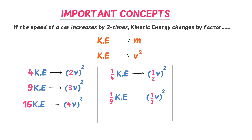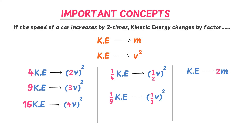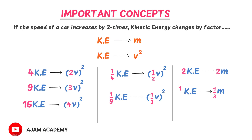What about the relationship between kinetic energy and mass? It is very simple — kinetic energy is directly proportional to mass. If mass increases by 2 times, kinetic energy increases by 2 times. If mass decreases by 3 times, kinetic energy decreases by 3 times, and so on. I hope you have learned the concept of kinetic energy.